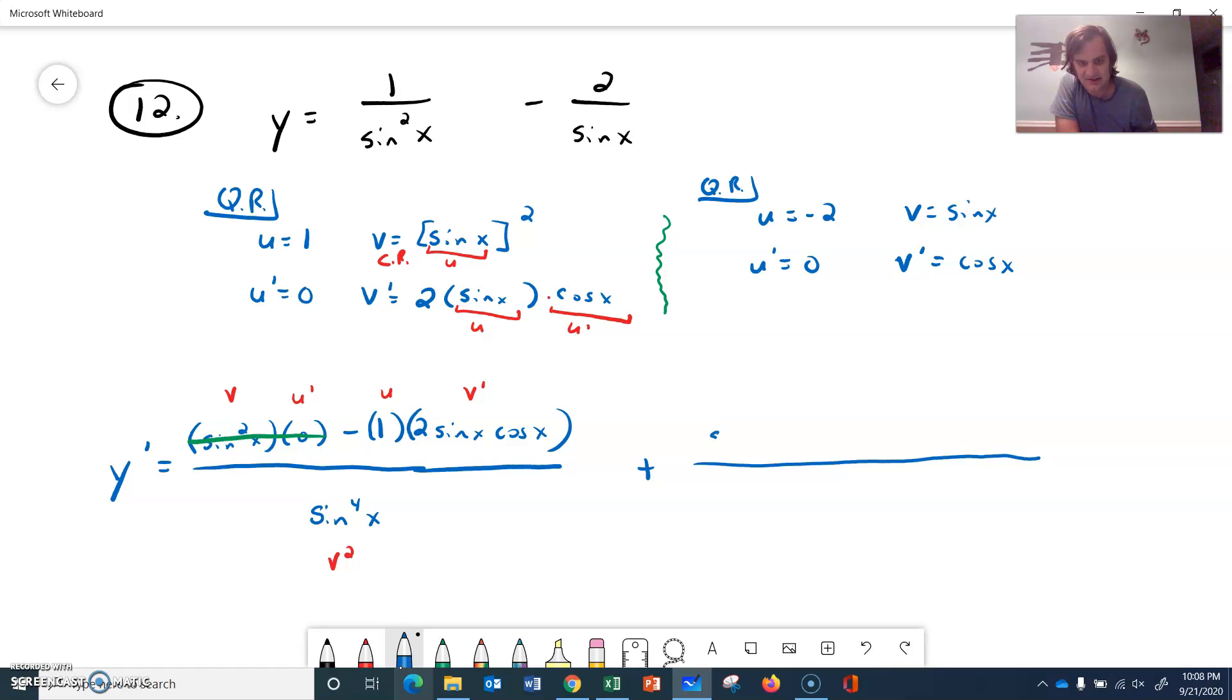So my u can be negative 2. Derivative of that would be 0. My v can be sine. Derivative of that is cosine. So if I put that back together, we will have plus the big old fraction because I incorporated the minus into it. But let's see, v, which is sine of x, times the derivative of u, which is 0, minus u, which is negative 2, minus negative 2, times the derivative of v, which is cosine. And all of that will be over v squared. So that would be sine squared of x.